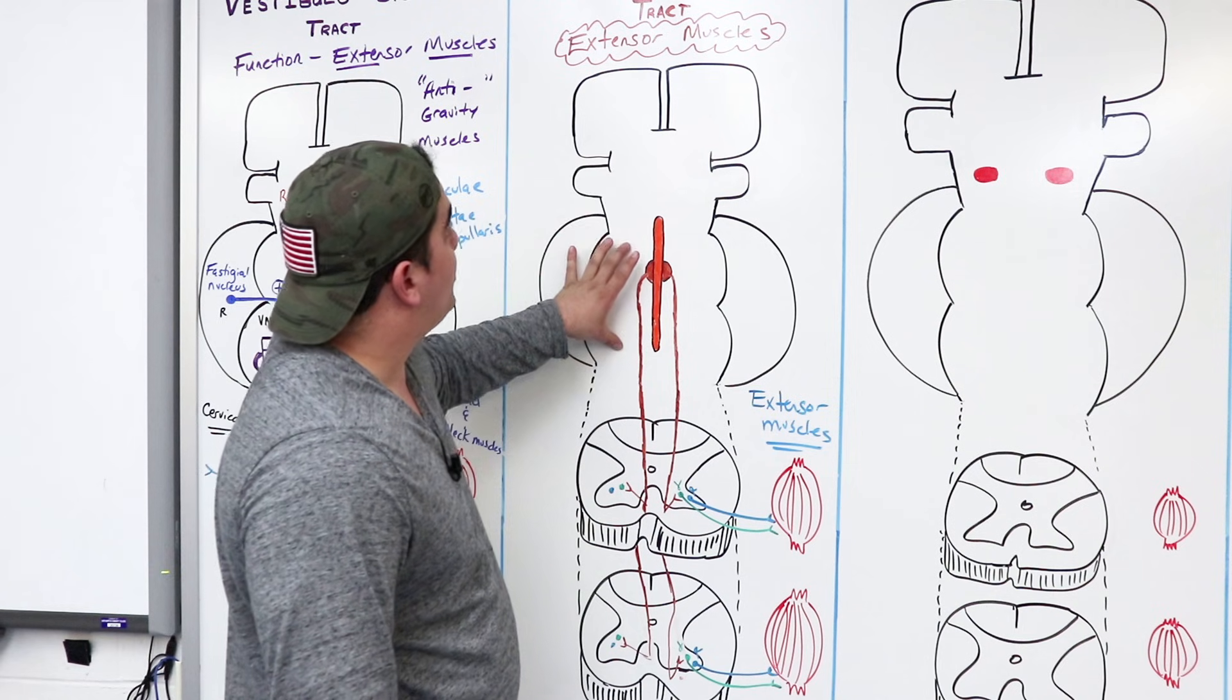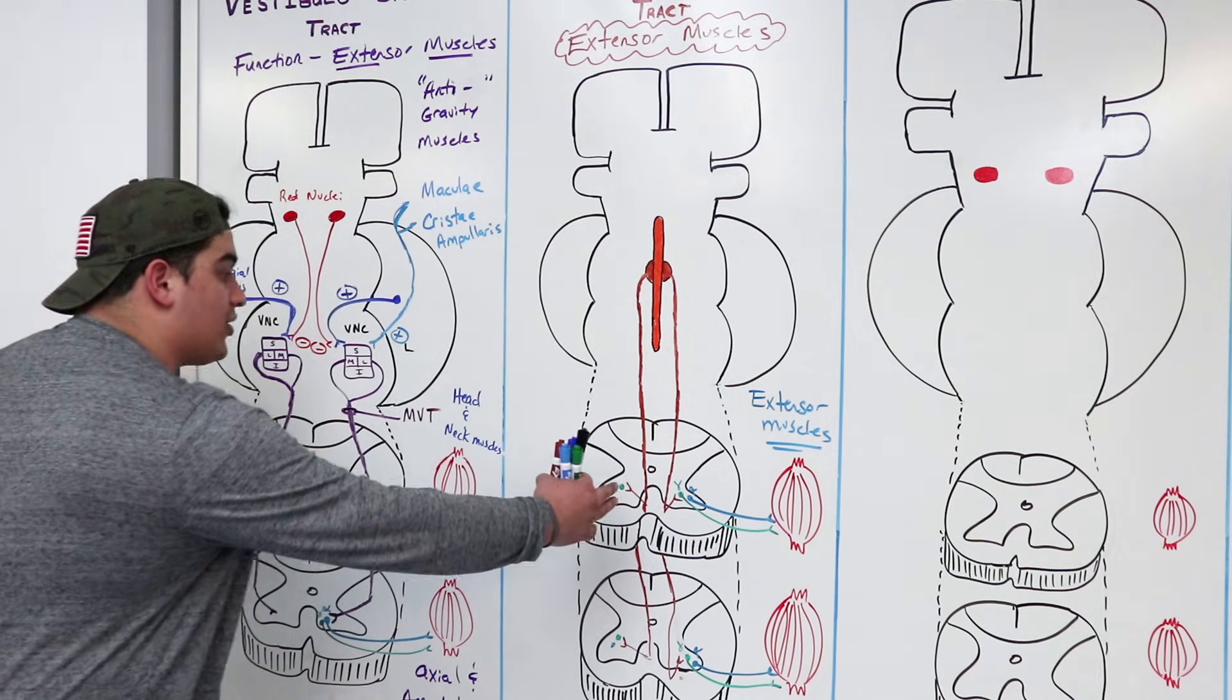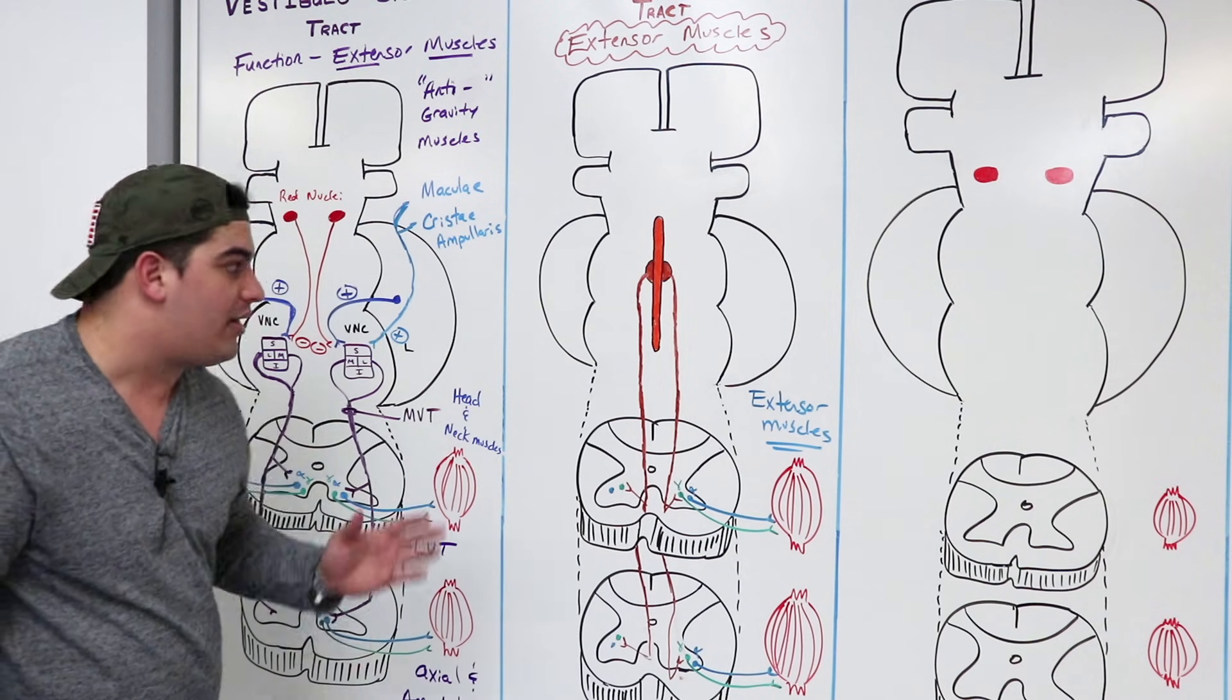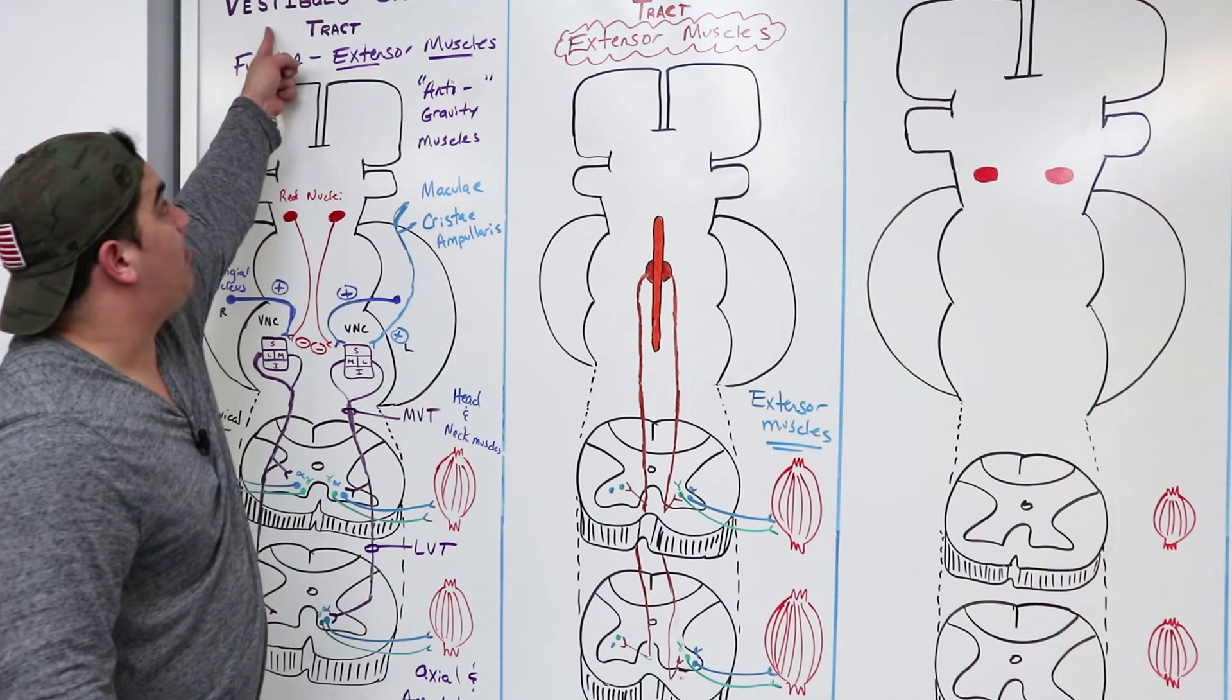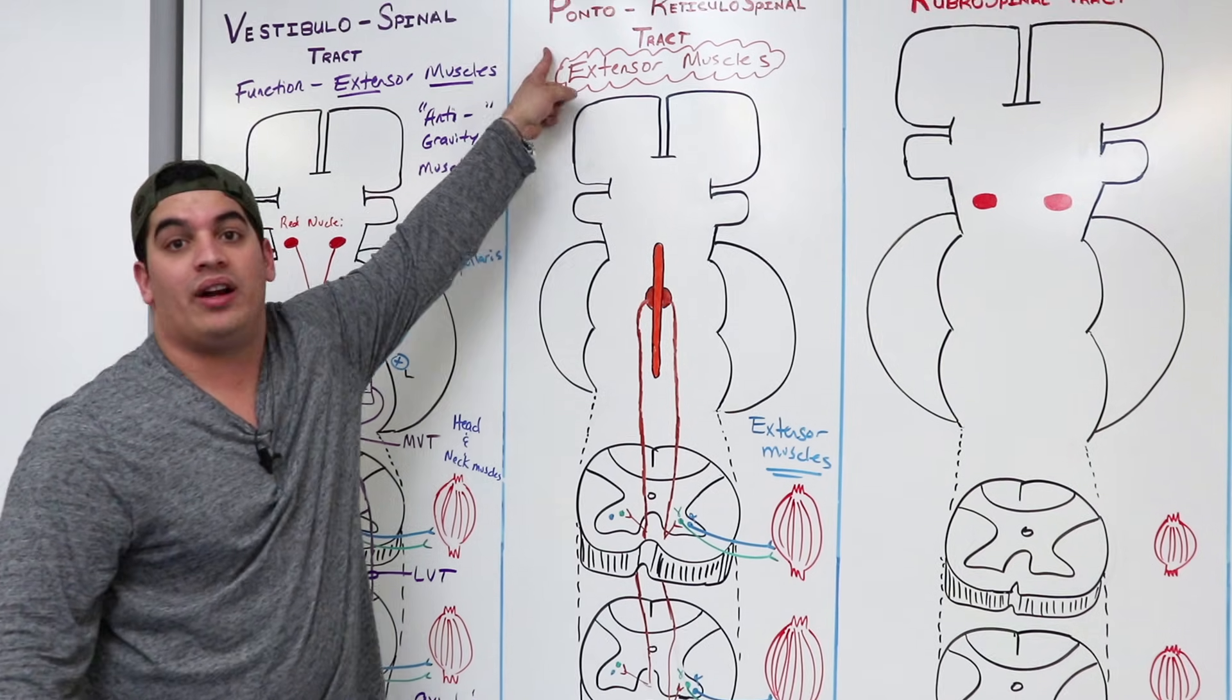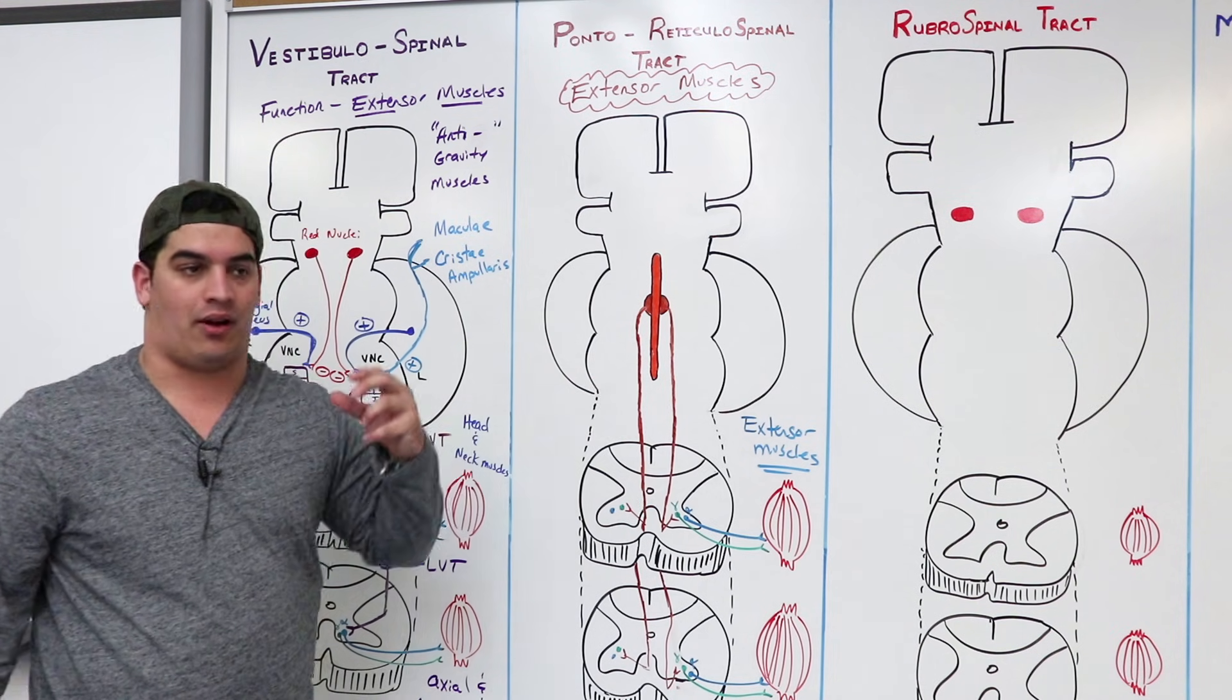Now, now that we understand the pontoreticulospinal and the vestibulospinal tract, I want you guys to remember to combine these two together, they're very pretty, very pretty. And what is it, vestibulospinal for the very, and the pretty for the pontoreticulospinal, these two are primarily important with extensor function.